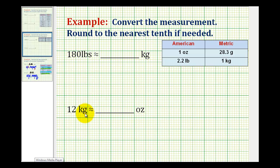We want to convert the following weights between the American and metric measurement system. And we'll do these conversions using unit fractions. So we'll start by writing 180 pounds as a fraction, so we'll put 180 pounds over one, and then we're going to multiply it by a unit fraction to do the conversion.